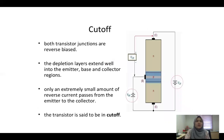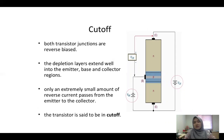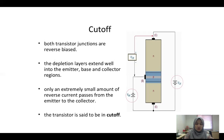In the cutoff region, both transistor junctions are reverse biased. The depletion layers extend well into the emitter-base and collector regions, and only an extremely small amount of reverse current passes from the emitter to the collector — the transistor is said to be cutoff.